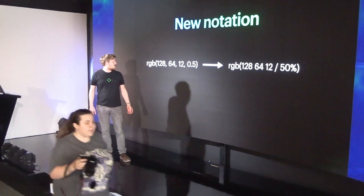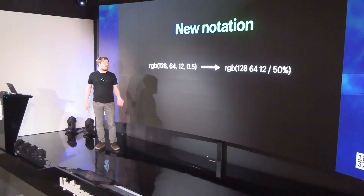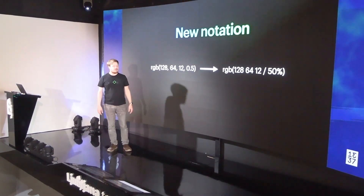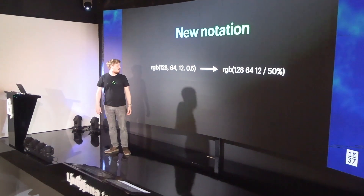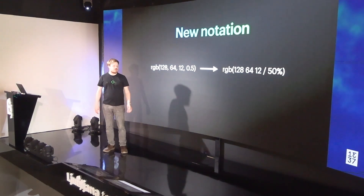You can now write, instead of using commas, you can now just use spaces and separate alpha with a slash. So we have red, green, blue, and then slash alpha.